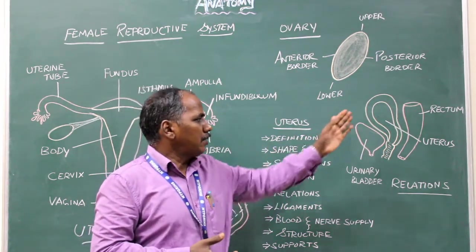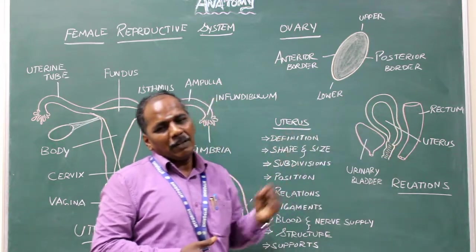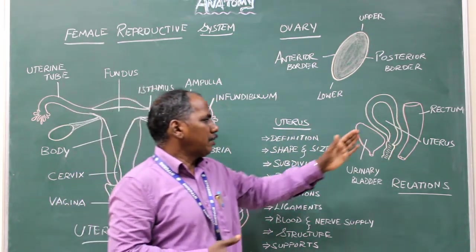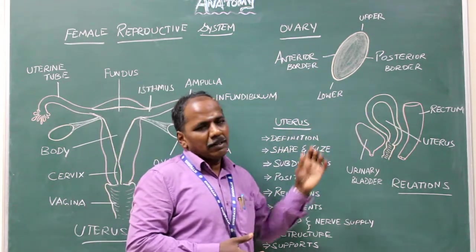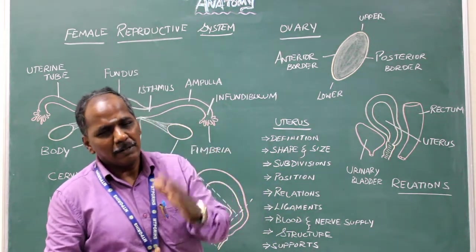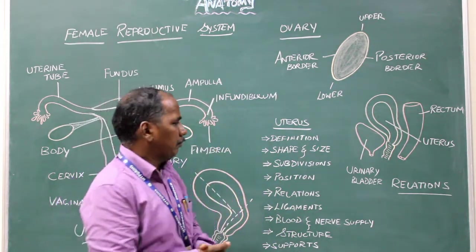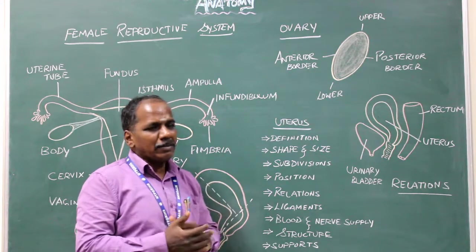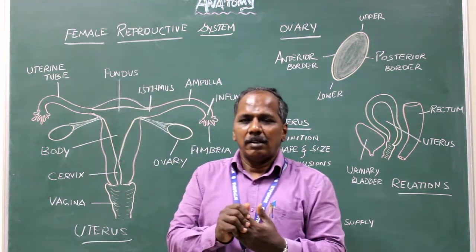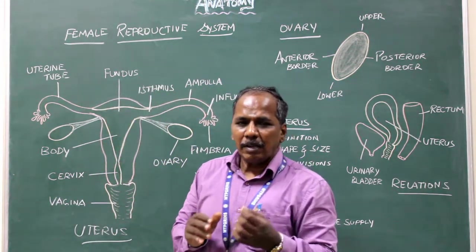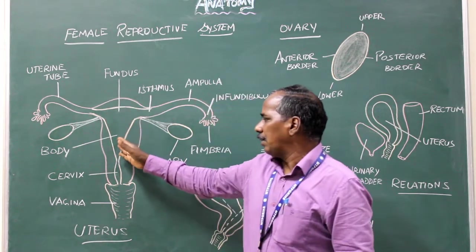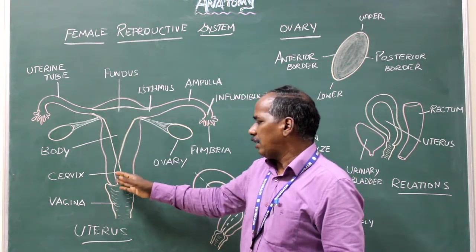The length is 7.5 cm, the breadth is 5 cm, and the thickness is 2.5 cm. Subdivisions of the uterus: it is divided into fundus, body, and cervix.